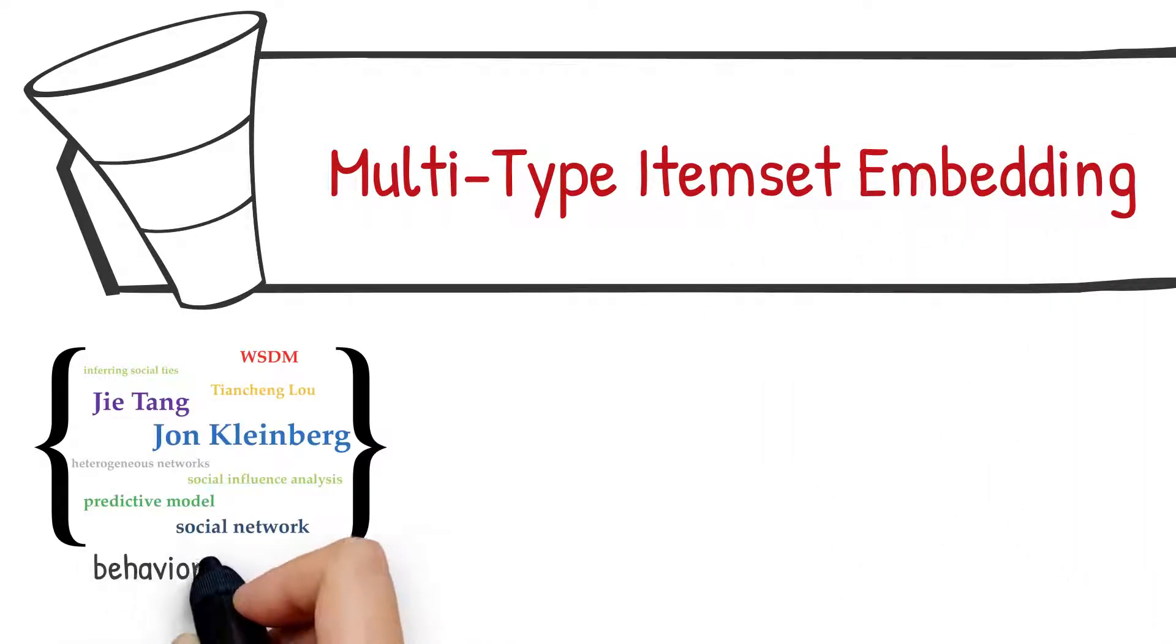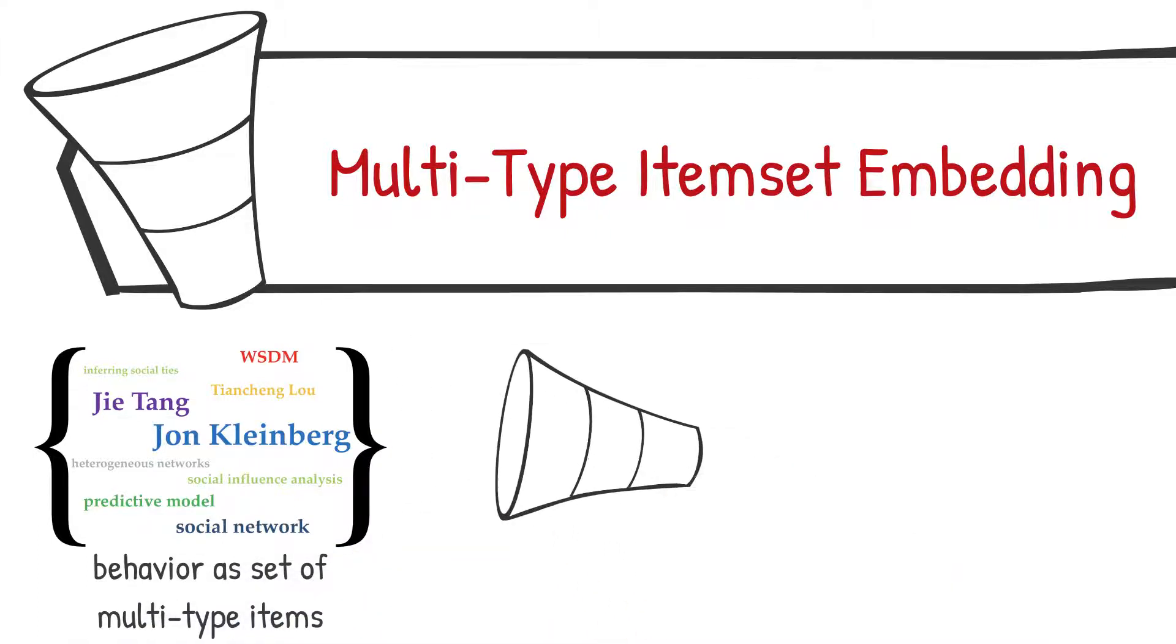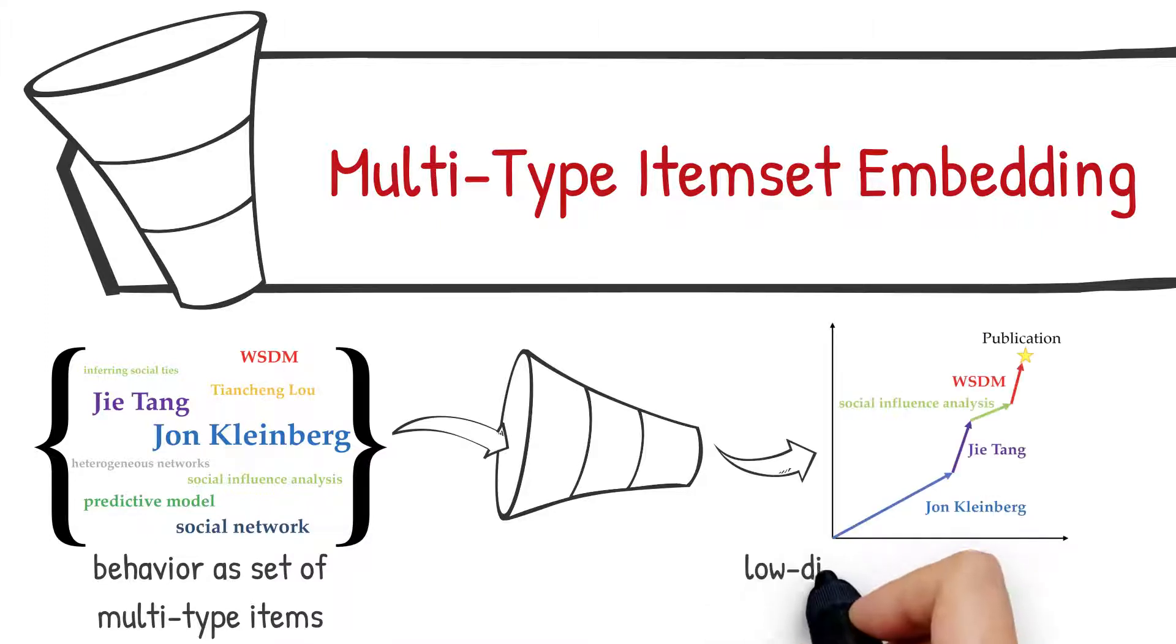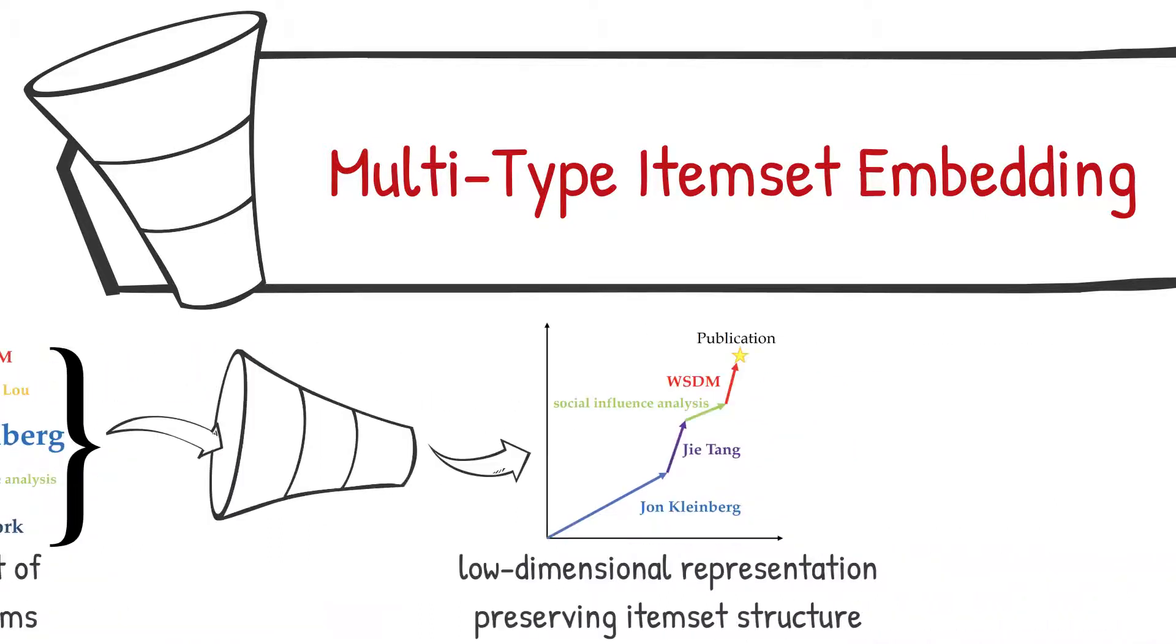In this method, we treat each behavior as a set structure containing multiple types of context items so that we can learn the low-dimensional representation of context items, and in the meantime, preserving the item set structure.